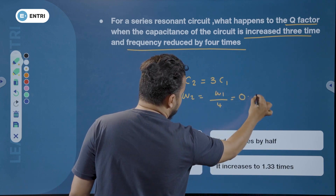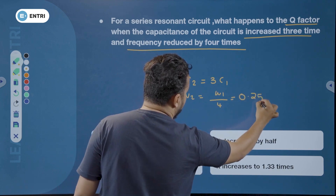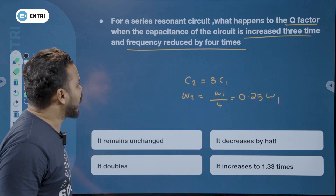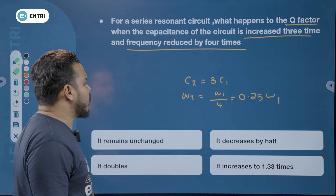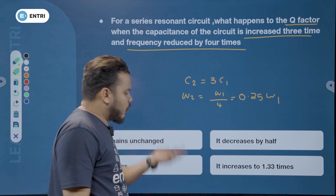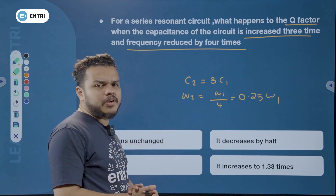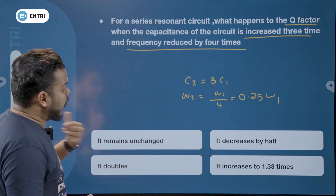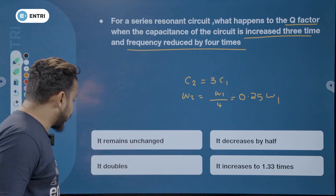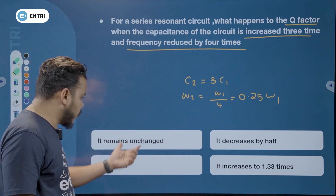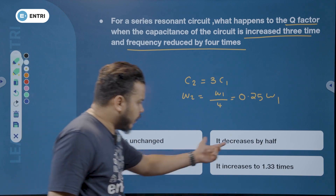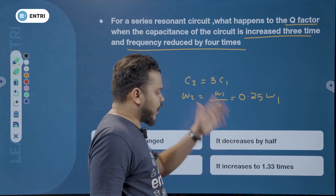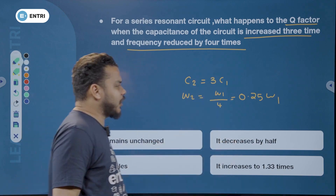We can write omega 2 as 0.25 omega 1. Capacitance and frequency have an inverse relationship. So what happens to the quality factor? Options: remains unchanged, decreased by half, it becomes double, or it increases to 1.33 times.